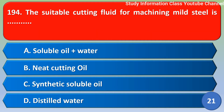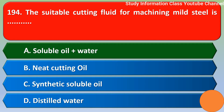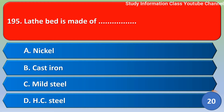Next question. The suitable cutting fluid for machining mild steel is: Option A, soluble oil plus water; Option B, neat cutting oil; Option C, synthetic soluble oil; Option D, distilled water. The correct answer is Option A, soluble oil plus water.